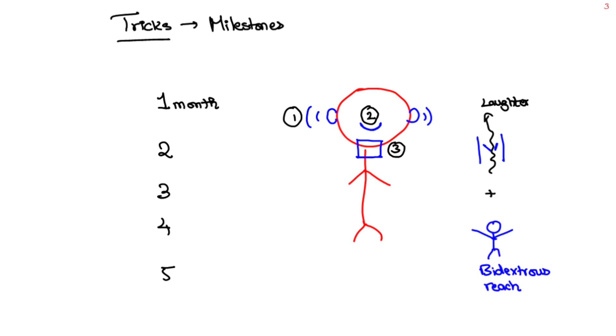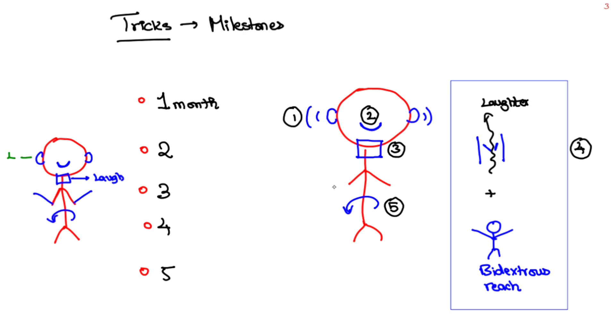Bidextrous reach, so both occurs in fourth month. Next is rollover which occurs by fifth month. Let's recap: a baby in supine position, alert to sound, social smile, neck holding, laughter and bidextrous reach, rollover.